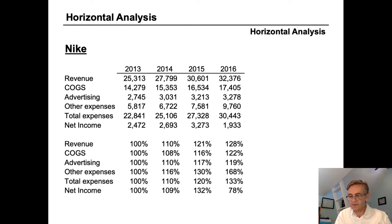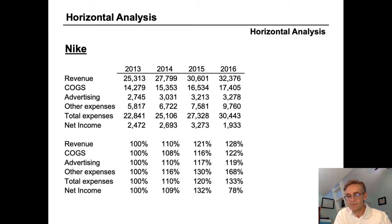If we conduct a horizontal analysis for our new detailed expense data, we do it the same way — holding the base year 2013 constant at 100 percent and expressing each subsequent year as a percentage of 2013. We can get to our answer very quickly. We can see that cost of goods sold in 2016 is only 122 percent of 2013, while sales increased 128 percent. This means costs of sales have increased slower than sales and have become more efficient over time.